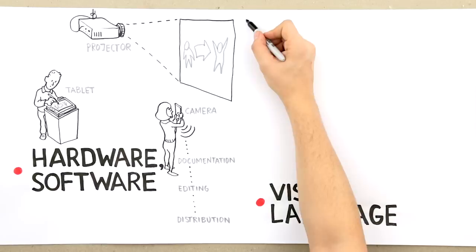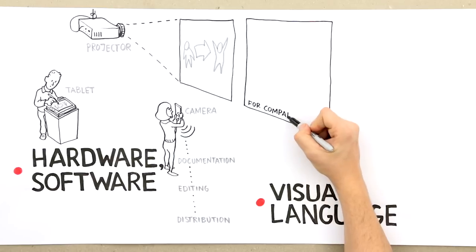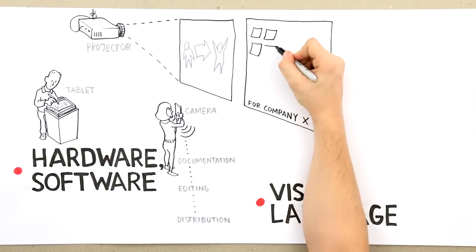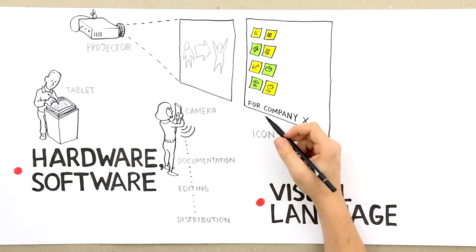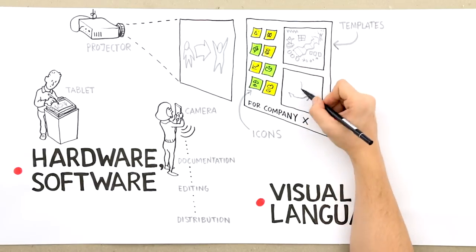Visual language. Build a library of your own visual language designed specifically for your field or company. This could be a set of icons for standard situations or it could be pre-made templates and metaphors or pictures designed for certain dialogues.